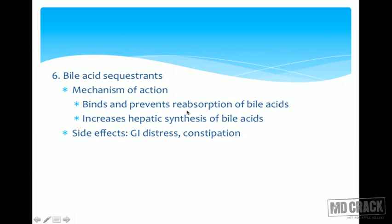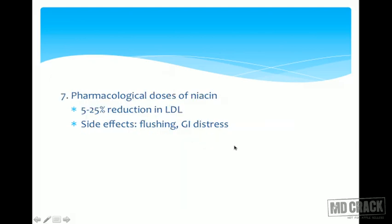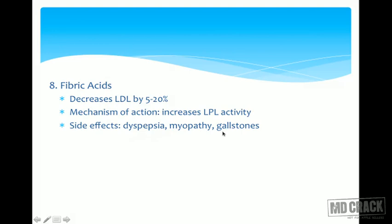Another guideline is use of bile acid sequestrants such as cholestyramine, which bind to and prevent enterohepatic circulation of bile acids, thereby increasing hepatic synthesis of bile acids. Their side effects include GI distress and constipation. Pharmacological doses of niacin can bring about up to 25 percent reduction in LDL but cause flushing and GI distress. Fibric acids decrease LDL by 5 to 20 percent by increasing lipoprotein lipase activity, but have side effects like dyspepsia, myopathy, and gallstones.